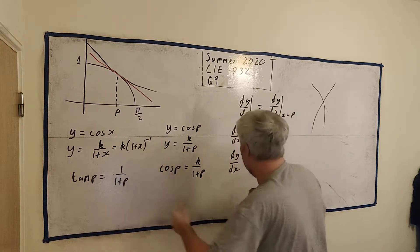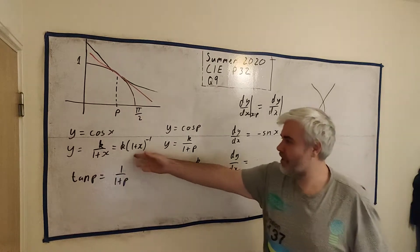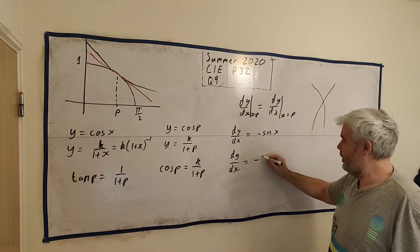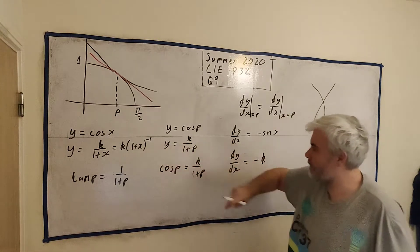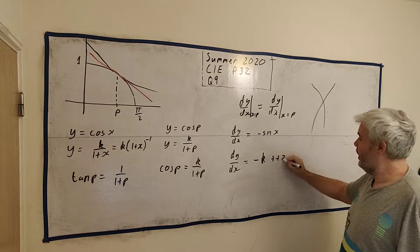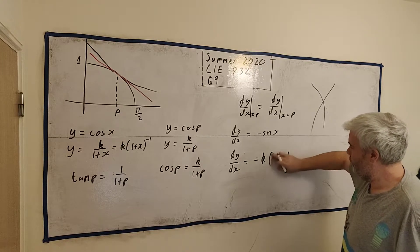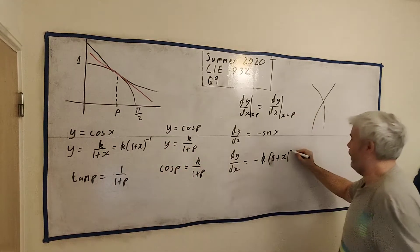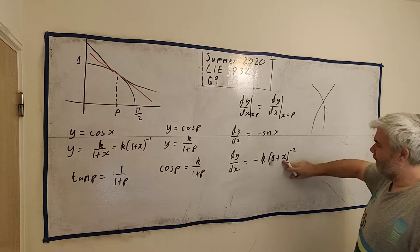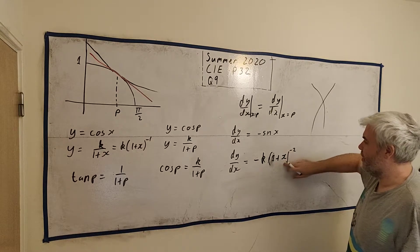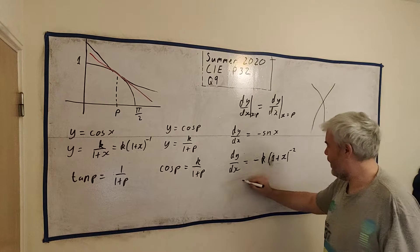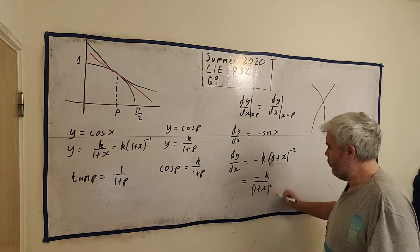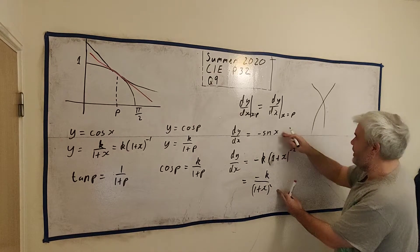If we differentiate here, we get minus 1 comes down, minus 1 multiplied by k. We differentiate this bracket, 1 plus x, that should be a 1, to the power of, take 1 power away, minus 2. And then multiply by the derivative of the inside the bracket, which is just 1. So this is fine. Let's rewrite this as minus k over 1 plus x squared. This gives us something else that's equal to each other.